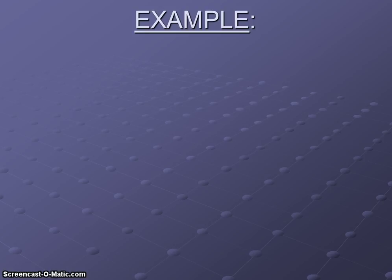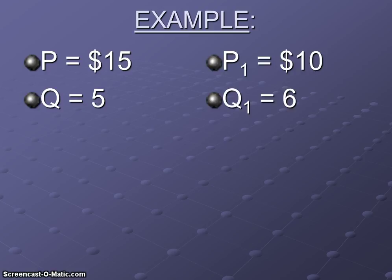So, for example, let's say that at the price of $15, five units could be sold of the product. People would buy five units. And at a new price of $10, six units will be sold.